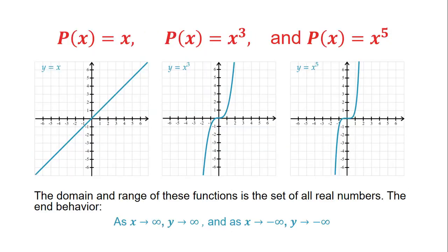First, we'll look at the graphs of basic power functions with a leading coefficient of 1 where the degree is odd: y equals x, y equals x cubed, and y equals x to the 5. y equals x is the line with y-intercept 0 and slope 1. y equals x cubed goes through the origin and through the points (1,1), (2,8), (-1,-1), and (-2,-8). y equals x to the 5 also goes through the origin and through (1,1), (-1,-1), (2,32), and (-2,-32).